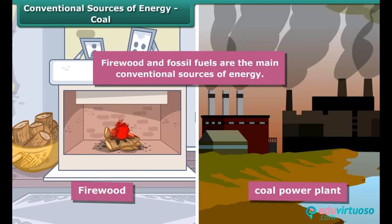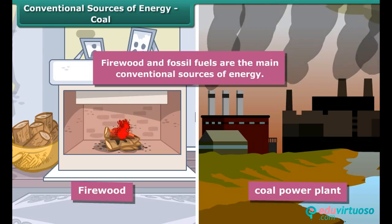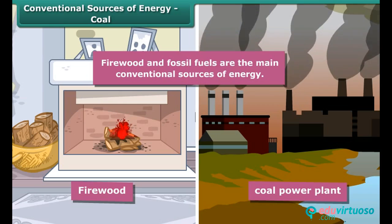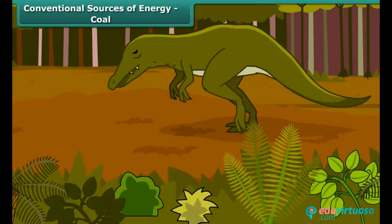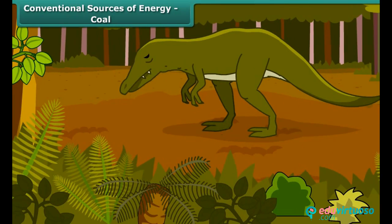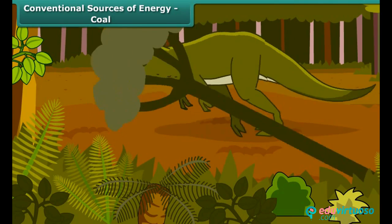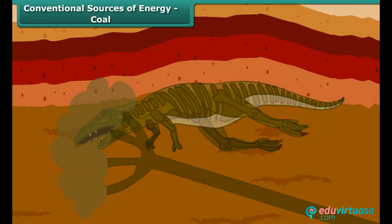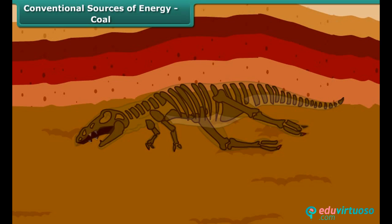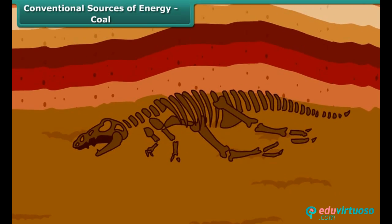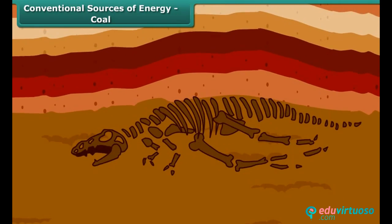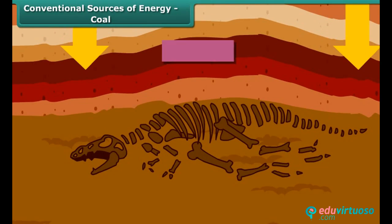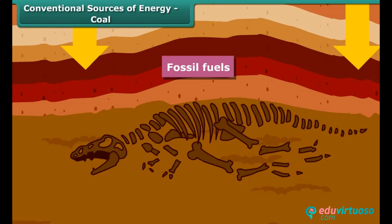Firewood is widely used for cooking and heating in villages. It is obtained from cutting of trees. Millions of years ago, remains of dead plants and animals were buried under the earth. On application of heat and pressure, they got converted into fossil fuels.